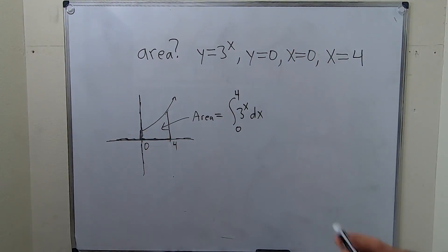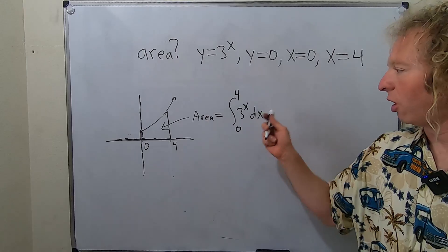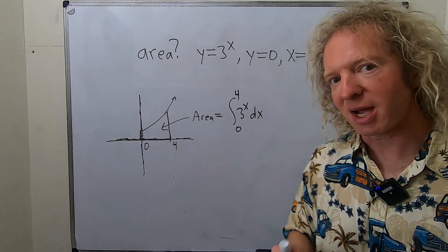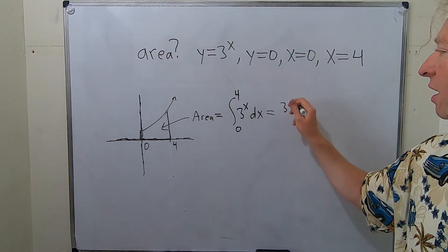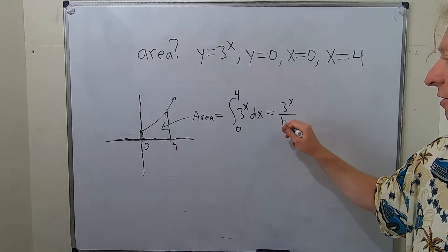Okay, so now all we have to do is integrate this. So recall, when you integrate 3 to the x, you just get 3 to the x, and then you divide by the natural log of 3.